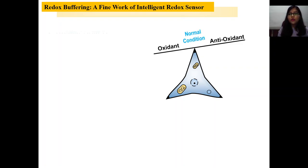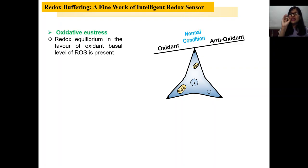So what is oxidative eustress? If there is a cell in normal condition, oxidant concentration is little higher than antioxidant concentration and the basal level of ROS is present. This is called oxidative eustress.